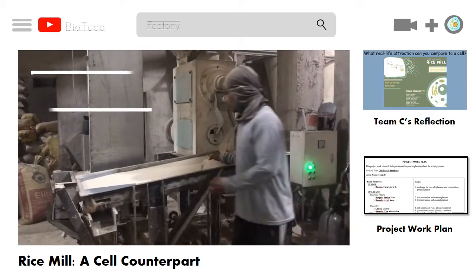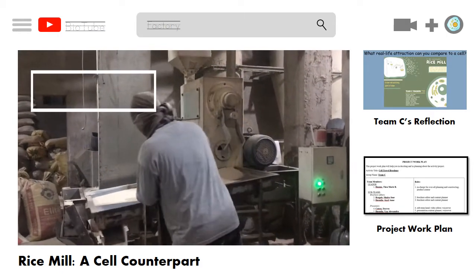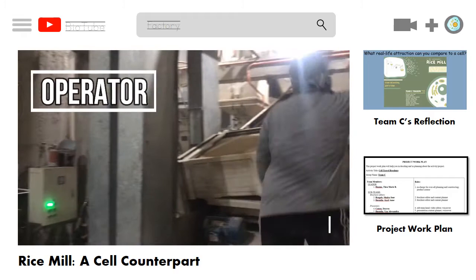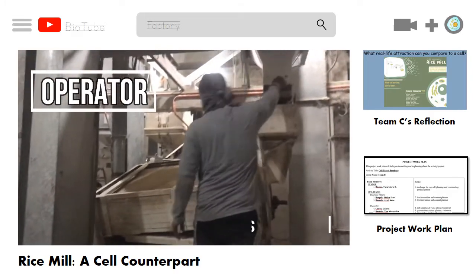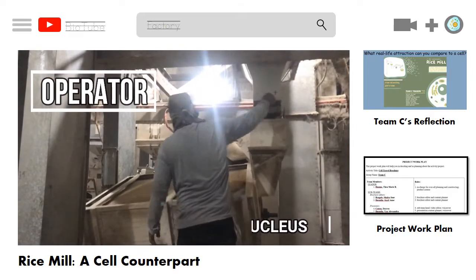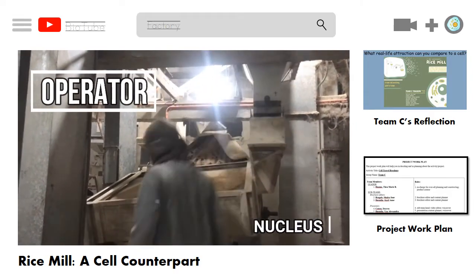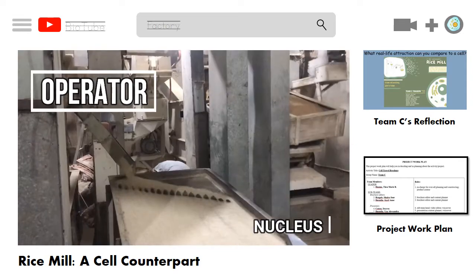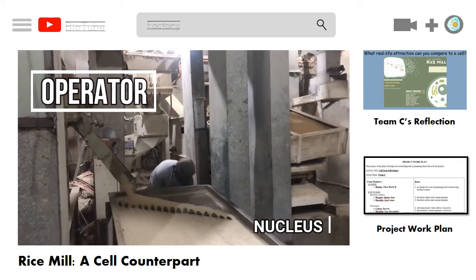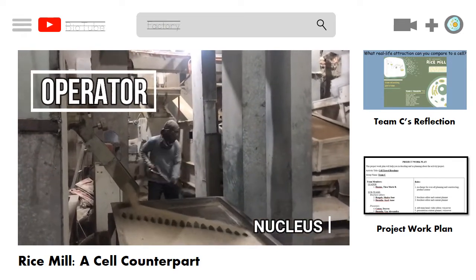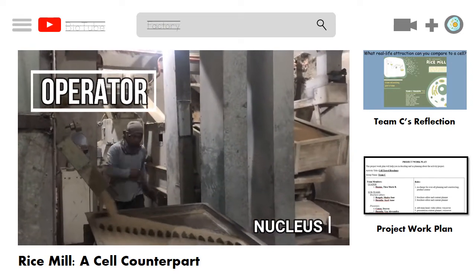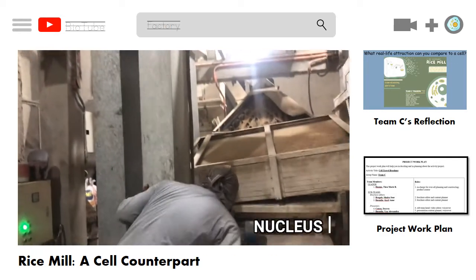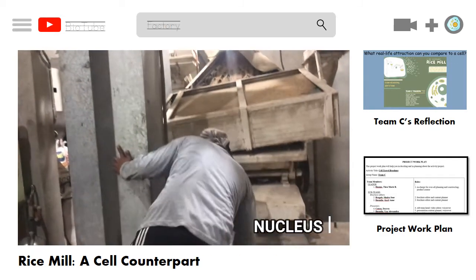This is the operator of the rice mill. He acts like the nucleus of the cell — he oversees everything that happens during the whole milling process. Similarly, the nucleus controls and directs all the activities of the cell. Aside from that, the nucleus also houses the hereditary material of the cell, the DNA.